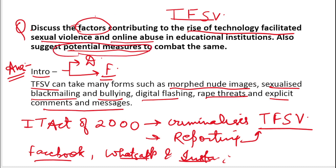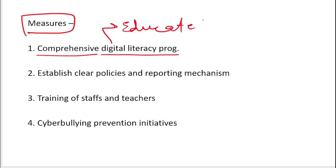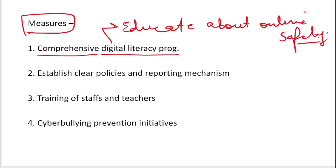We have discussed the factors. Now we move to the potential measures. The first measure is a comprehensive digital literacy program. We need to enhance digital literacy and educate everyone — not only students but everyone — about online safety, responsible internet use, consequences of harmful activities. We need to educate everyone, because many times people don't even read the terms and conditions and just say yes, leading to personal information being leaked.